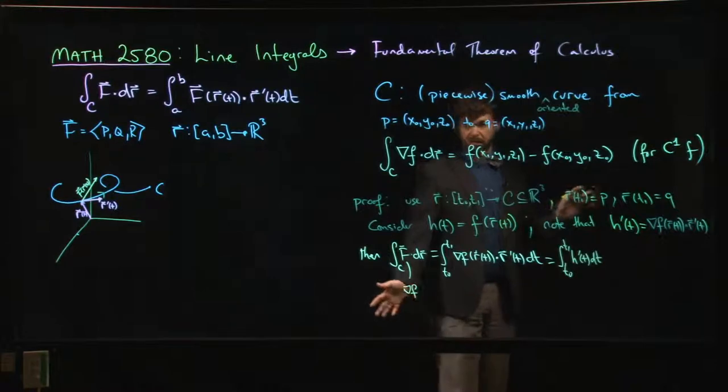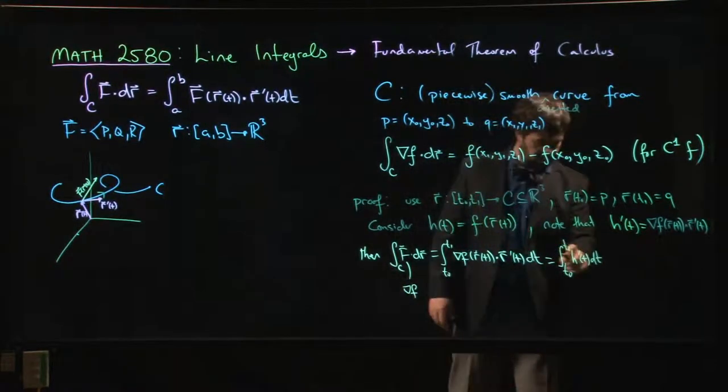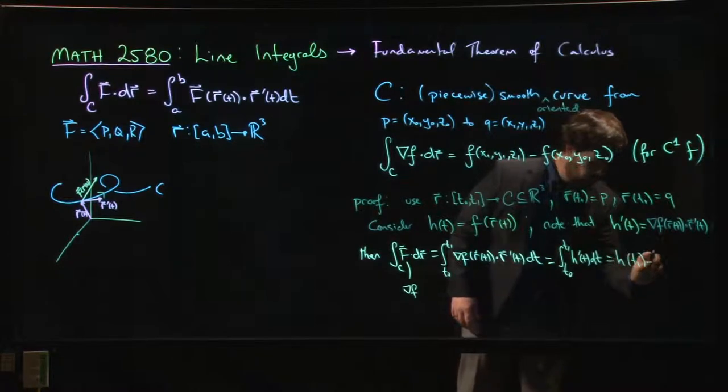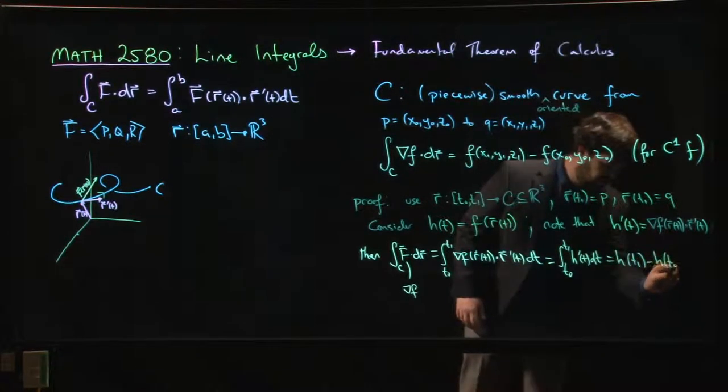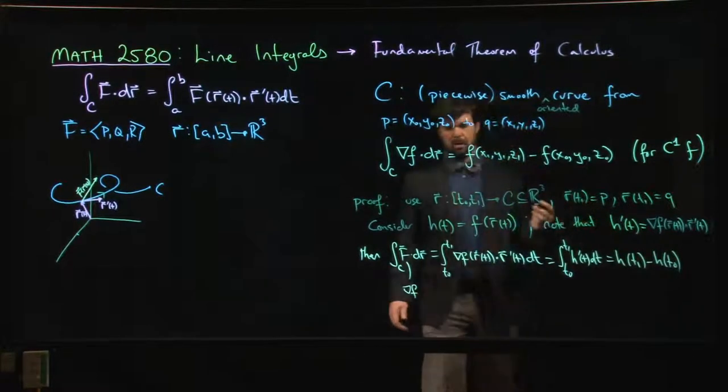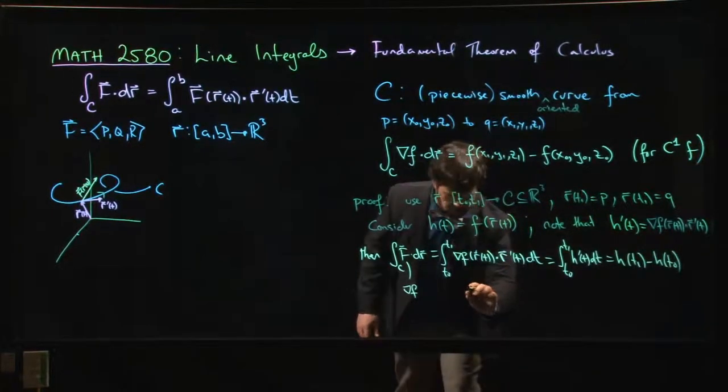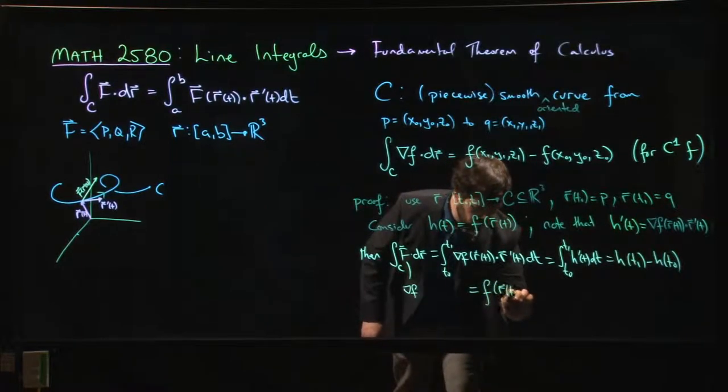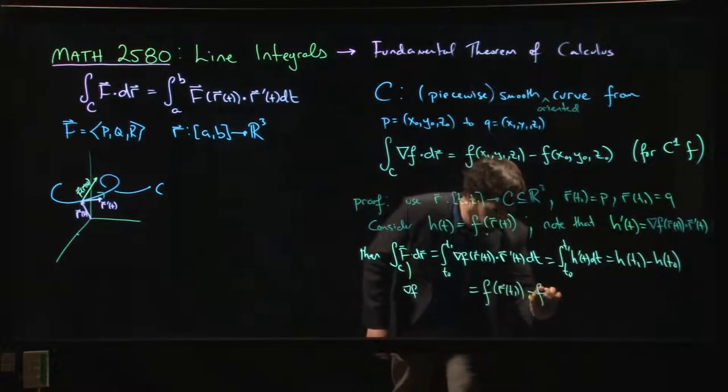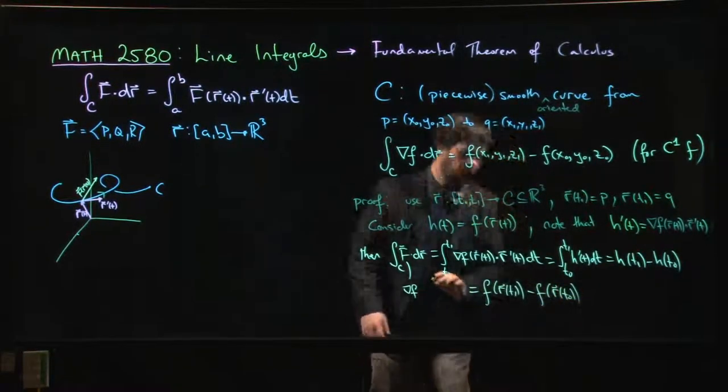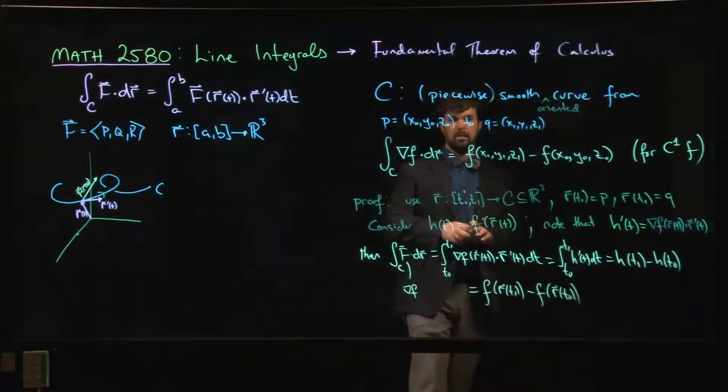And now the fundamental theorem of calculus from calc 1 says that this is h at t1 minus h at t0. But what's h at t1? h at t1 is f at r of t1. h at t0 is f at r of t0.